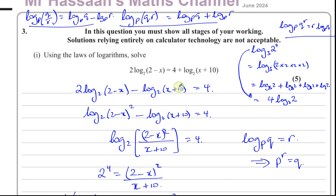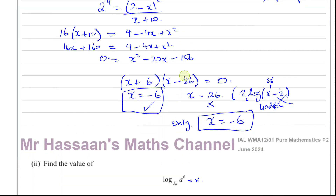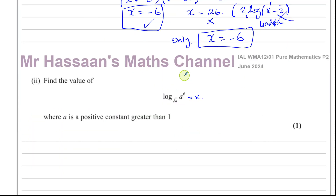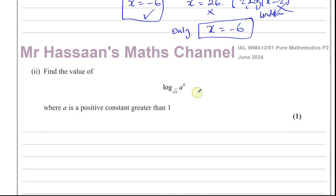So there's the answer to part 1: x equals negative 6 is the only value. For part 2, it says find the value of log base root a of a to the power of 6, where a is a positive constant greater than 1.